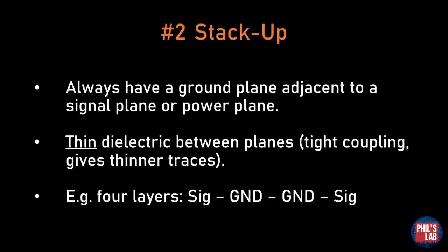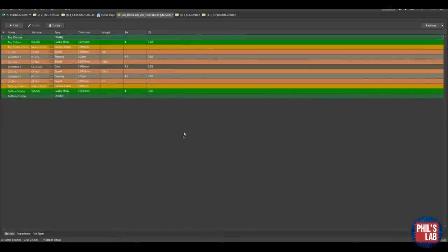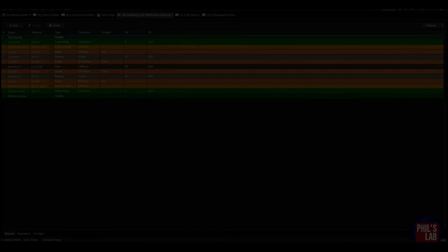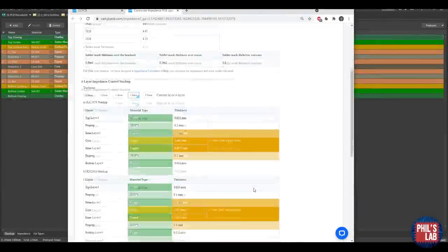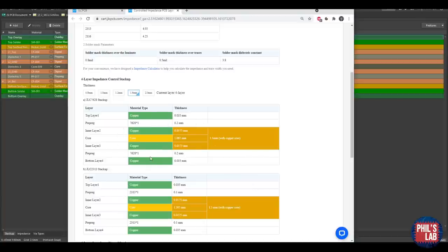A very important rule is also that underneath traces there are no splits in the reference plane. Secondly, we need to talk about board stack-up. We want a ground plane adjacent not only to a signal plane, but also adjacent to a power plane ideally. It's quite good to have a thin dielectric between planes, giving tight coupling and allowing thinner traces. A nice four-layer stack-up I typically use is signal on top and bottom, and ground in the inner layers. I've taken the stack-up I'm using for this board pretty much from the JLCPCB website — you can find the dielectric and copper dimensions in the controlled impedance PCB layer stack-up section.